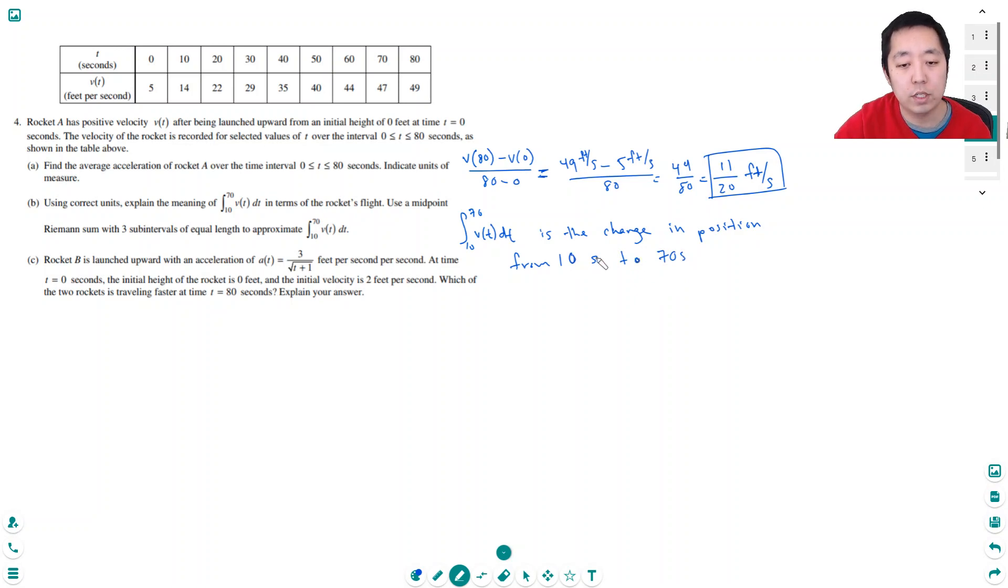And the reason you don't want to say it's the distance traveled is, well I guess its velocity is generally increasing so it doesn't change signs. But in principle, if v of t ever went negative during that portion, then it wouldn't be the same as the change in distance or distance traveled, right?